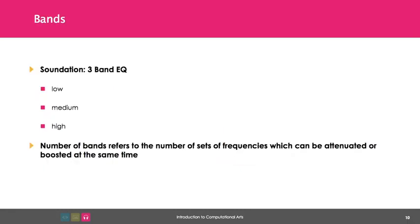Soundation is an example of a three-band EQ. There are only three controls: low, mid, and high. The number of bands refers to the number of sets of frequencies which can be attenuated or boosted at the same time.